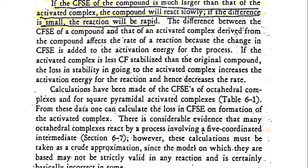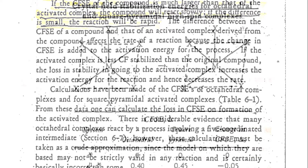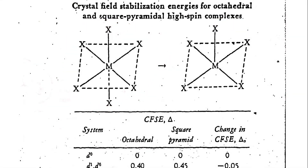We will discuss this in the form of a diagram for a clearer idea. In this example, the octahedral geometry of the coordination complex reacts by one ligand disintegrating, converting the complex into a square pyramidal form. This square pyramidal form is called the activated complex or intermediate.